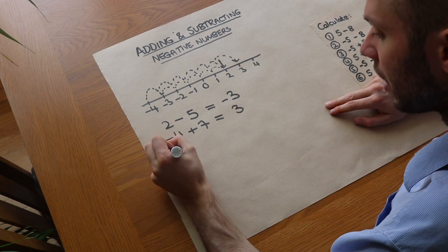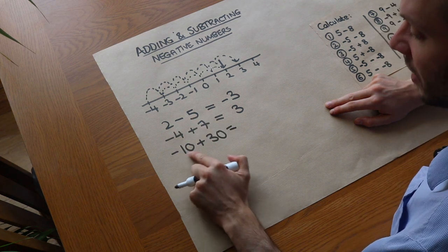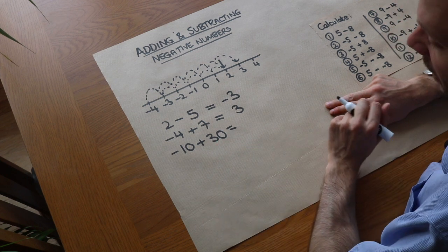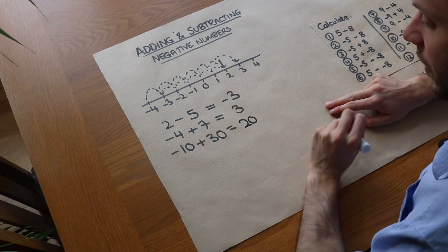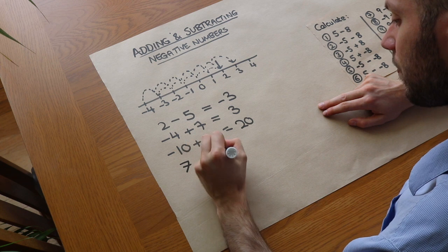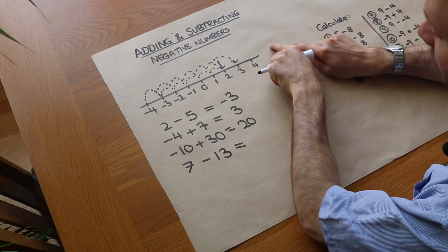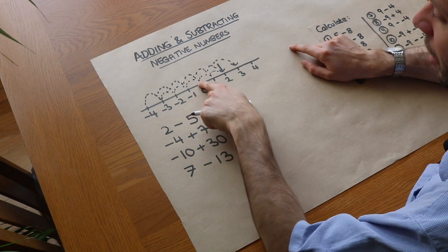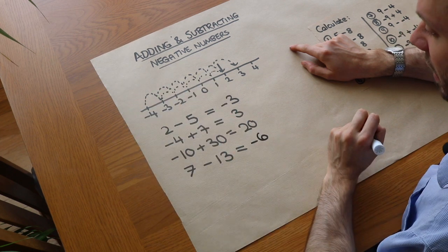For example, minus ten plus thirty: I could add ten to get from minus ten up to zero, but I've still got twenty left to add, so that gets me from zero up to twenty. It's the same with subtracting. If I had seven minus thirteen — starting at seven, subtracting seven gets you down to zero, but we've still got six left to subtract. From zero, subtracting another six gets me down to negative six.